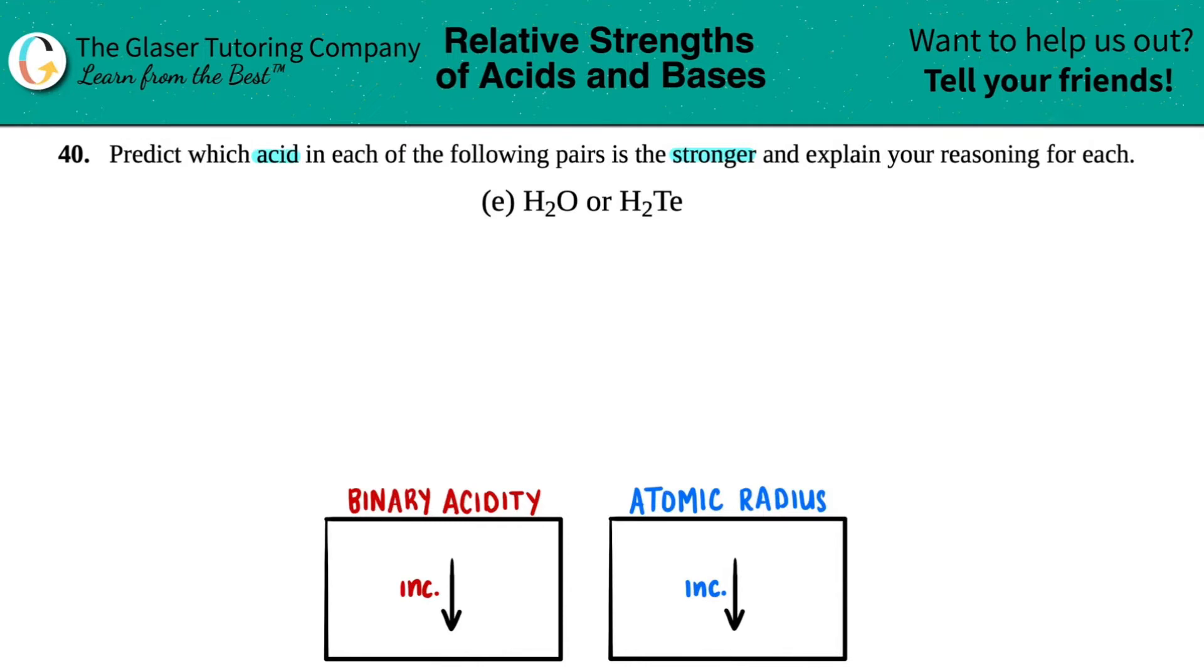So whenever you see that you just have a hydrogen with just one other element—I don't care what that element is—this would be classified as a binary acid. Binary means two, so you have just two elements in your compound.